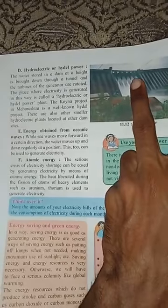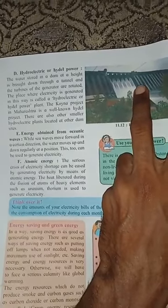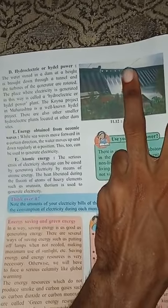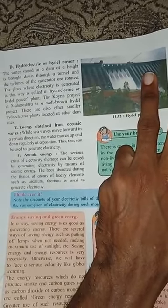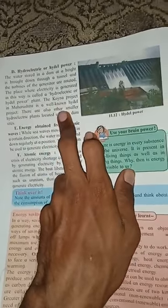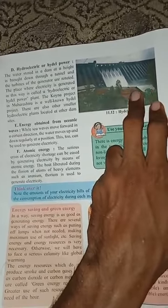Same way you can see hydroelectric or hydral power. Here water is stored on a dam, brought down through a tunnel, and the turbine of the generator is rotated — the place where electricity is generated. We call this a hydroelectric or hydral power plant. In Maharashtra, a well-known place is the Koyna project, where they produce hydroelectricity. There are also other smaller hydroelectric plants located on other dam sites.